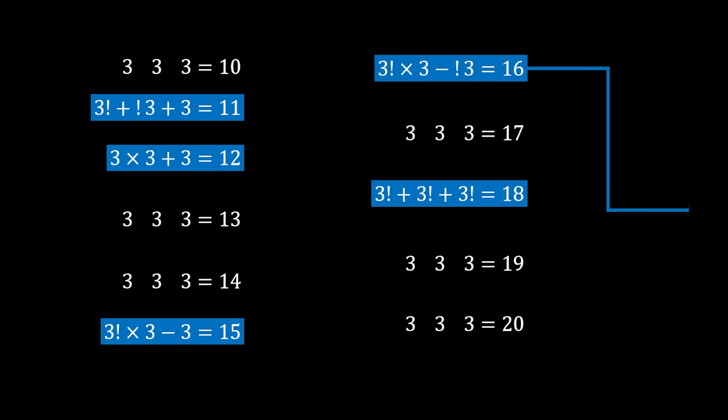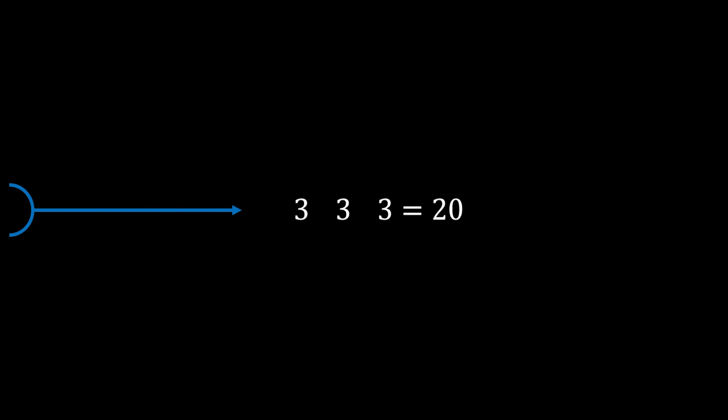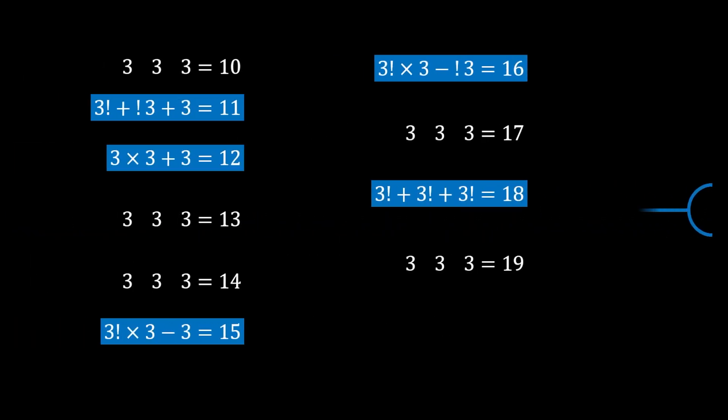For 20: 3! × 3 + !3 = 6 × 3 + 2 = 18 + 2 = 20. It's basically the same solution as for 16, only using plus this time.